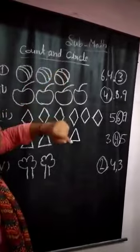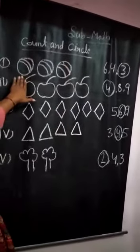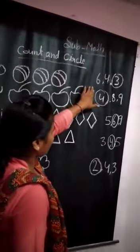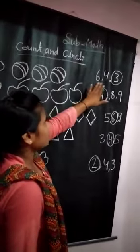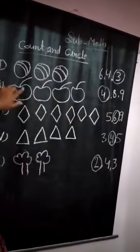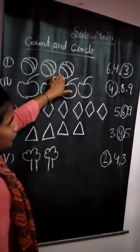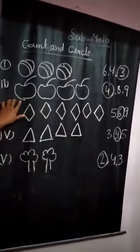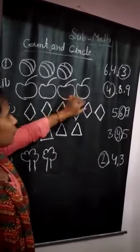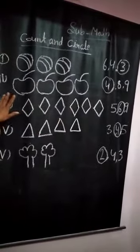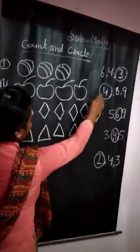Count and circle. How many balls are? One, two, three. Three balls are. Three circle. One, two, three, four. How many apples are? Four apples are. Four circle.